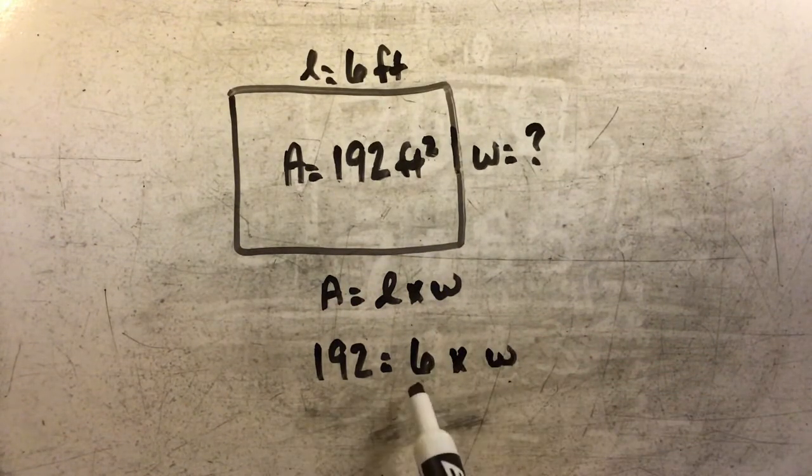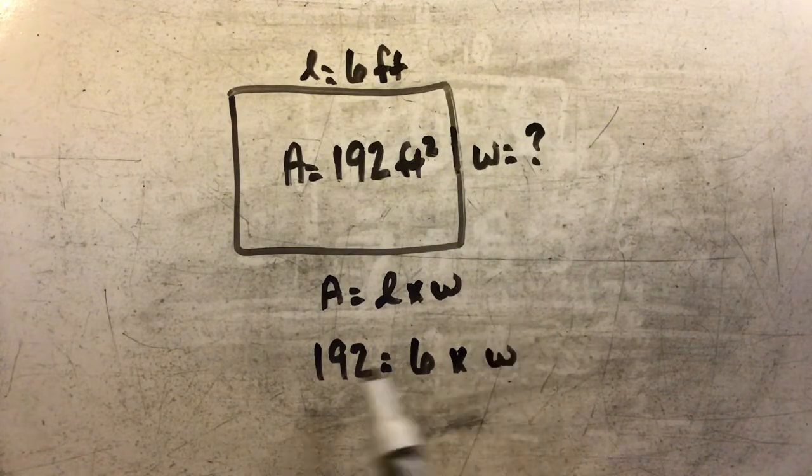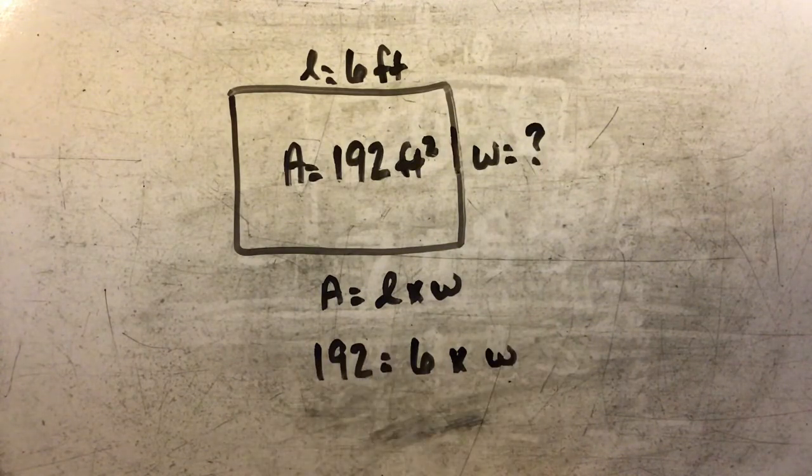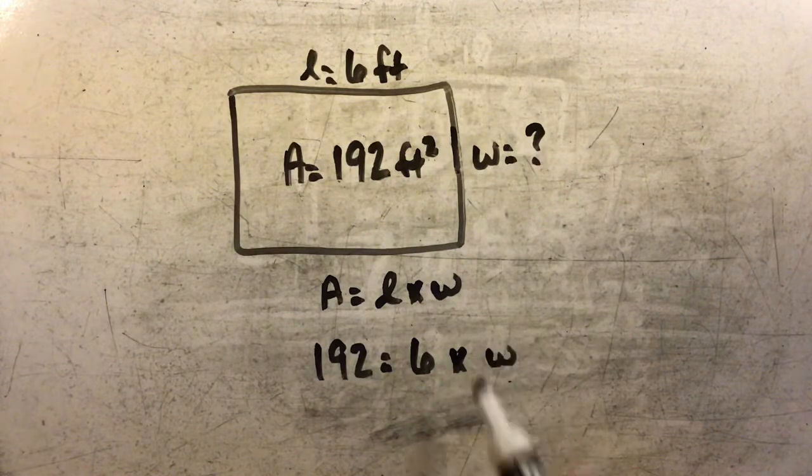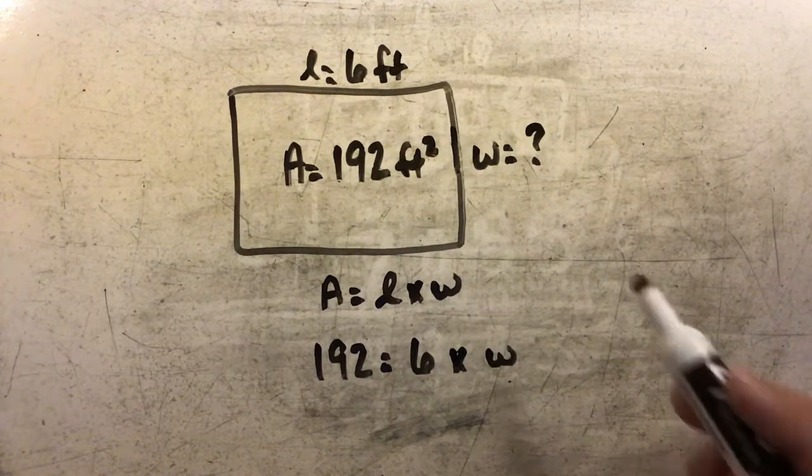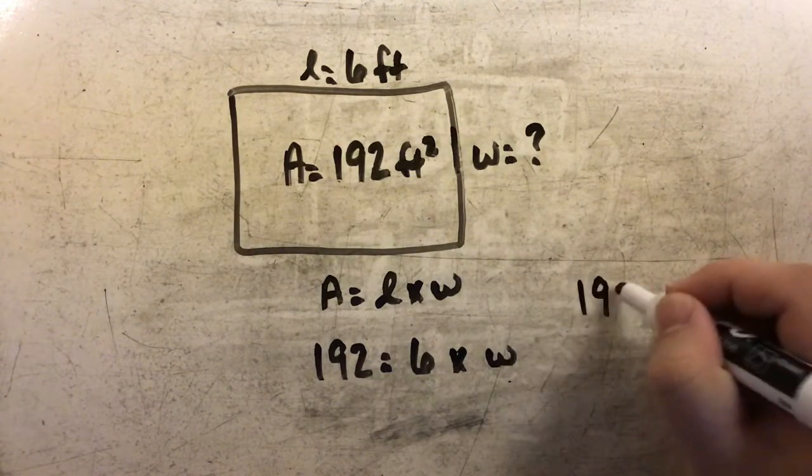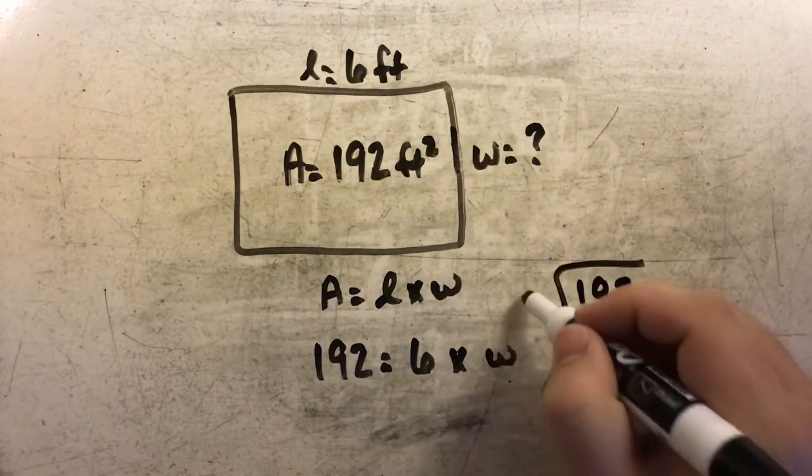This says 6 times something equals 192. To find that missing number, I'm going to divide 192 by 6.